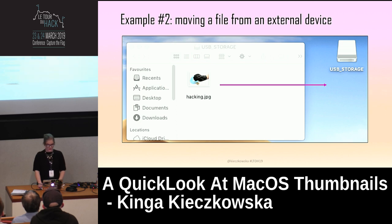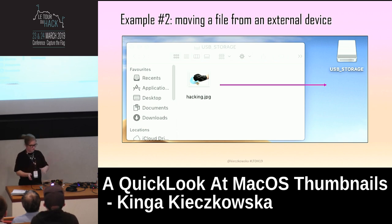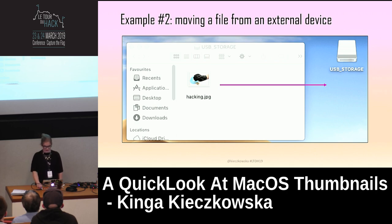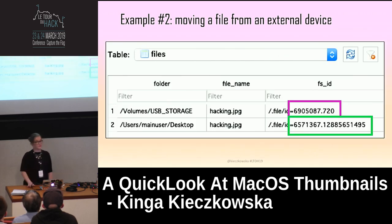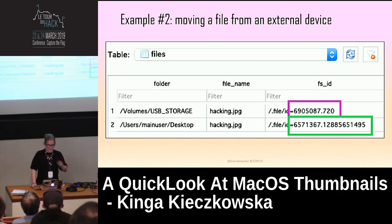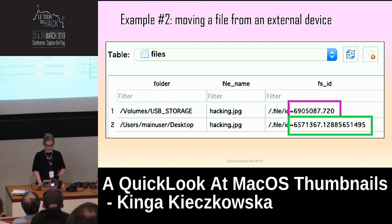Example two: an external device. I have a USB stick with a very important secret image called hacking.jpg on it. I drag it to the desktop and then look at the cache. There are two entries, and the file name is obviously the same — but you can see the file IDs are different. Both the volume ID and the file ID are different because it was moved from an external device.